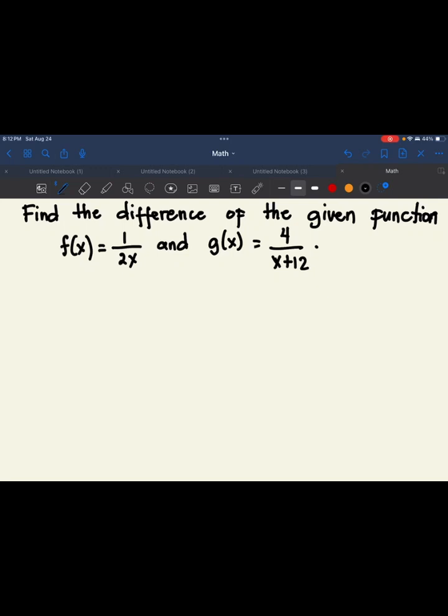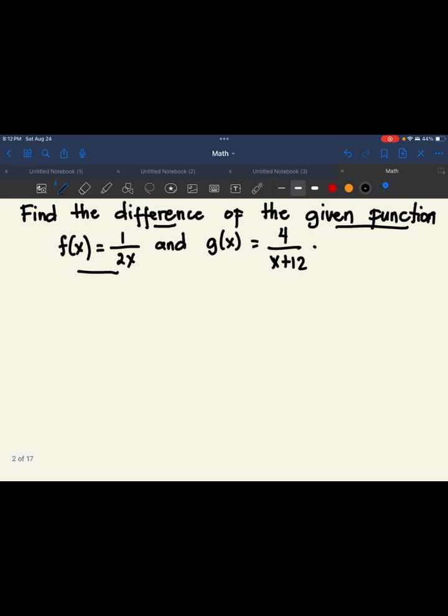So today we will discuss how to find the difference of the given function f of x equals 1 over 2x and g of x equals 4 over x plus 12. So the formula in finding the difference of the given function we have f minus g of x equals f of x minus g of x.